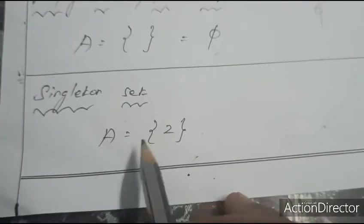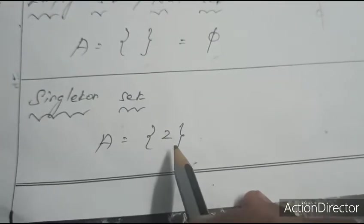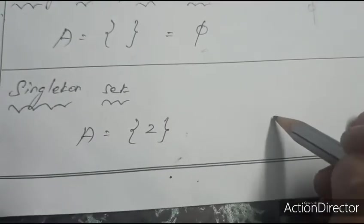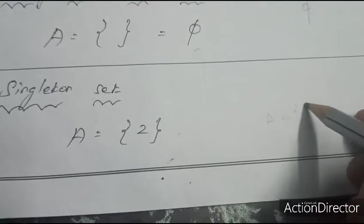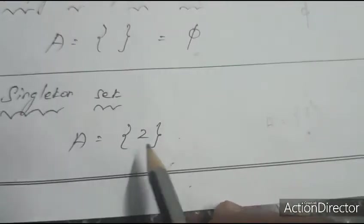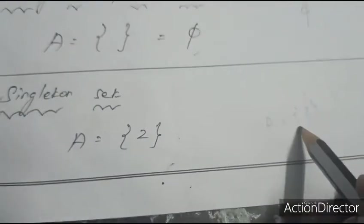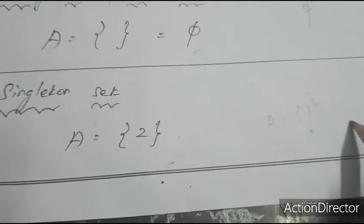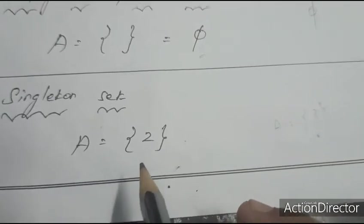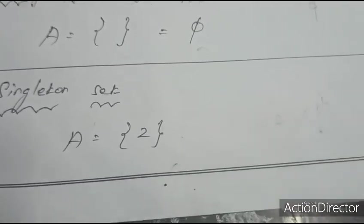Singleton set: a set with only one element is called a singleton set. For example, A = {3}, A = {2}, A = {5} — each has only one element, so it is called a singleton set.